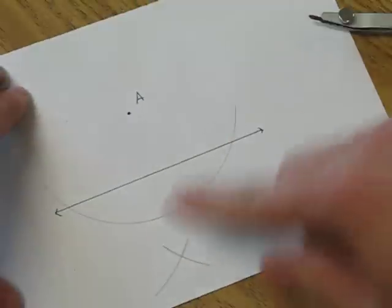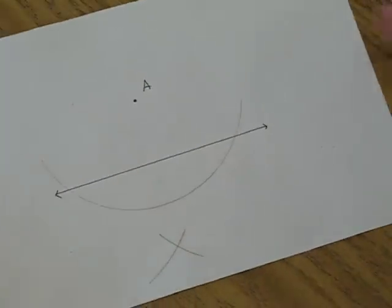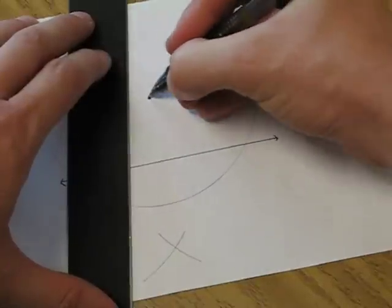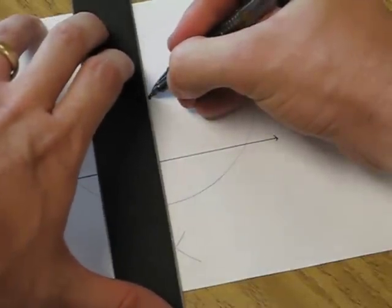So there's my X. Now we can connect our point A using our straight edge to our marks below the line.